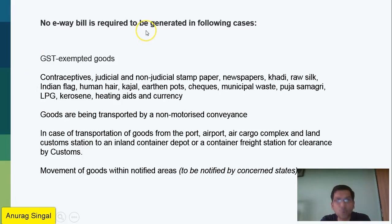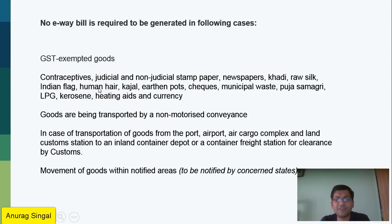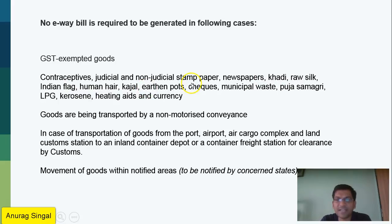No e-way bill will be required for: first, GST-exempted goods. Then certain specific goods have been notified as exempt, such as contraceptives, judicial and non-judicial stamp paper, newspapers, khadi, silk, Indian flag, human hair, kajal, earthen pots, cheques, municipal waste, puja samagri, LPG, kerosene, heating aids, and currency.